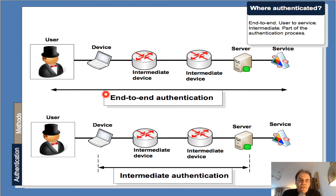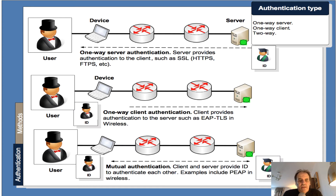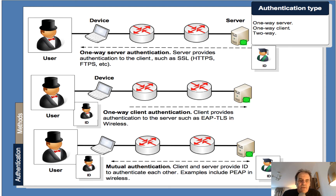Increasingly what we see is end-to-end authentication, where the user is authenticating themselves to the end service. There are different ways of authenticating: one-way server authentication is what we see in HTTPS, where the server sends a digital certificate to the user and that identifies the server. We can also do it the other way — one-way authentication of the user or device to the server, used in EAP-TLS in wireless. And if we really want to make sure that either side is correct, we have mutual authentication — methods such as PEAP — where we can pass IDs between the two parties. Mutual authentication is the best, but takes a bit more setup.